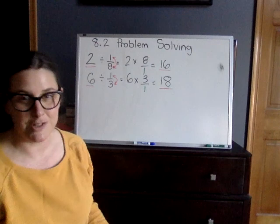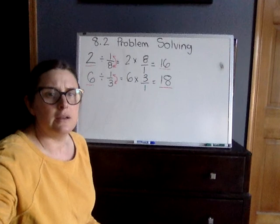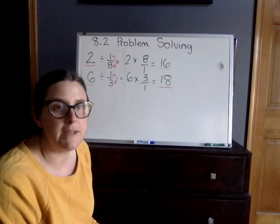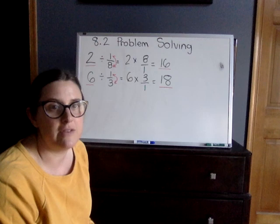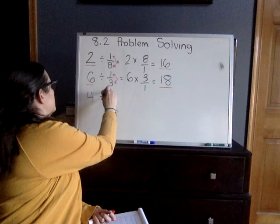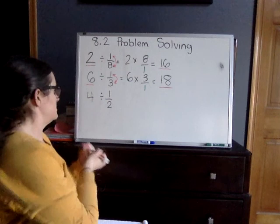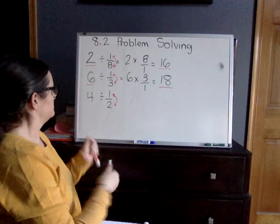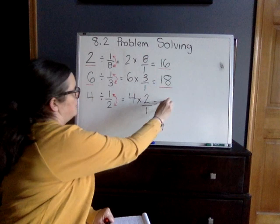Number four: suppose the baker has four loaves of bread and cuts the loaves into halves. How many one-half pound loaves of bread would the baker have? So we're taking our first number, which is four, and dividing it by 1/2. Your first step is to flip the fraction. We end up with 4 times 2/1. 4 times 2 is 8.